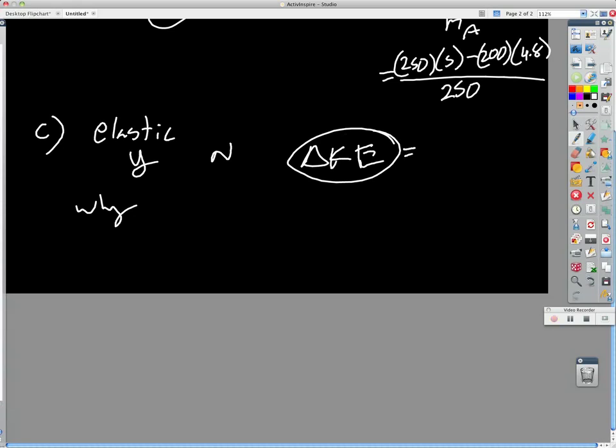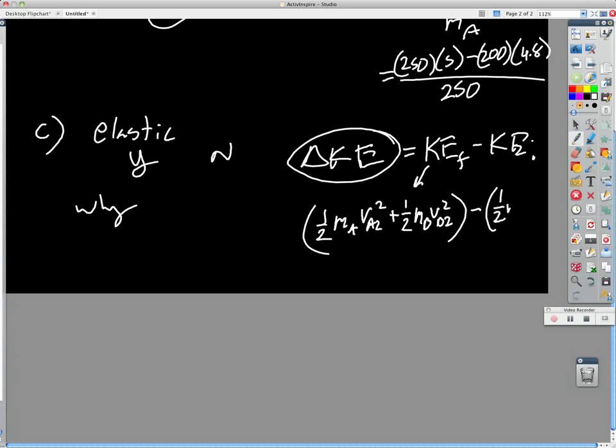So, this one comes out to be, KE final is ½mava2 squared, whatever this is, plus ½mbvb2 squared and minus ½mava1 squared. And we know all these numbers. Va2 was 1.2. Vb2 was 4.8. And va1 was 5. So, plug it all in and see if you get something. I don't know off the top of my head.